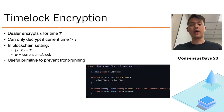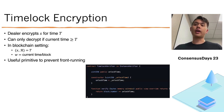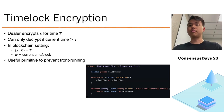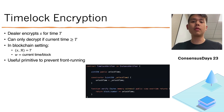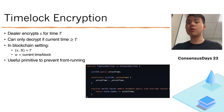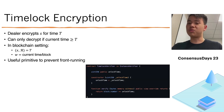This is a useful primitive to prevent front-running. As you can imagine, this can be implemented by first time-lock encrypting the transactions for a future block, ordering the transactions before the decryption time. And then once the decryption time arrives, the transactions have already been ordered — so this can be used to prevent front-running.